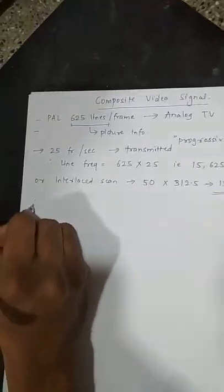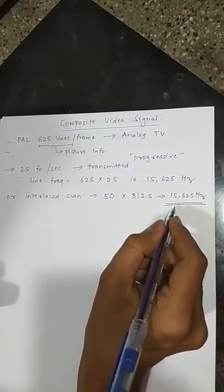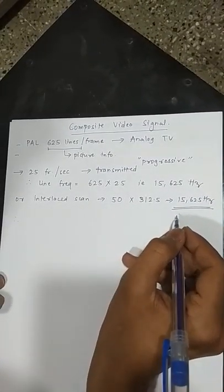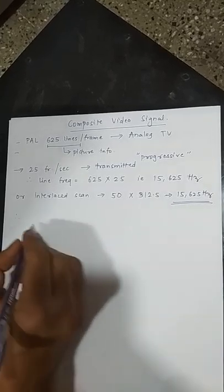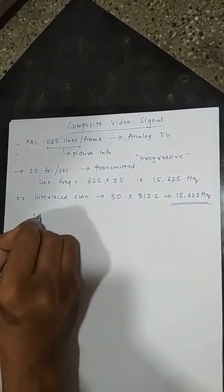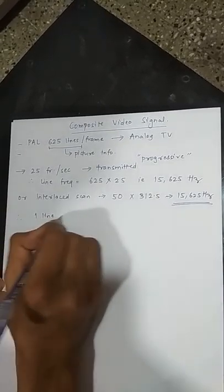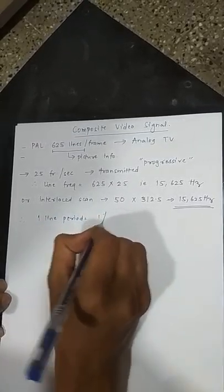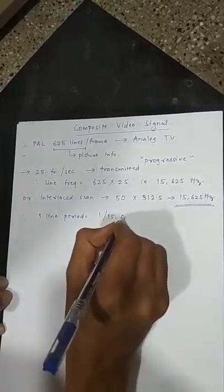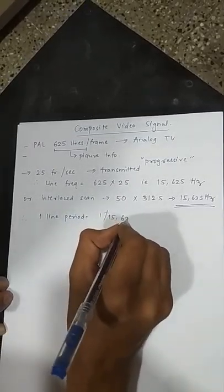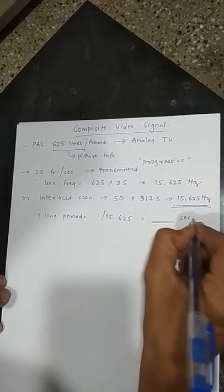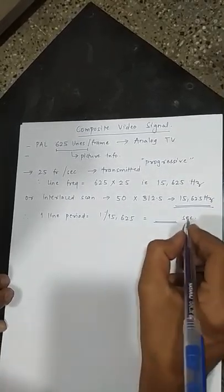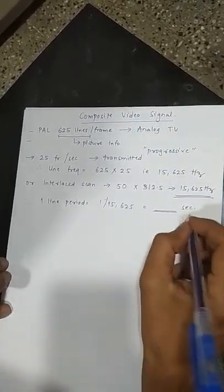Therefore, if this is my line frequency, then one line period can be calculated as reciprocal of this number, which comes out to be one line period is equal to 1 upon 15,625. Take some time and calculate this much amount of line period in seconds. This is going to be our first reflection spot.